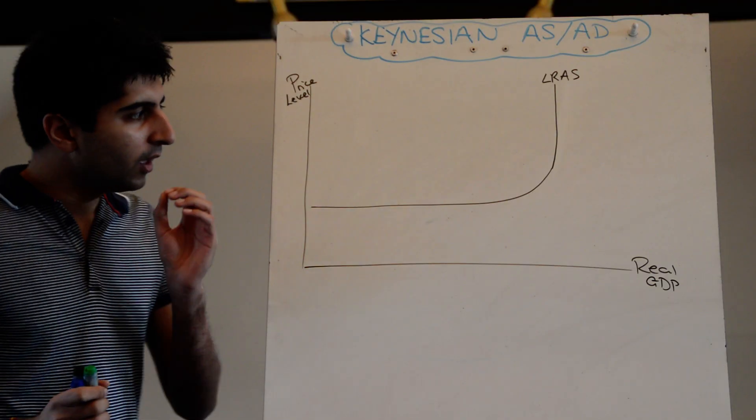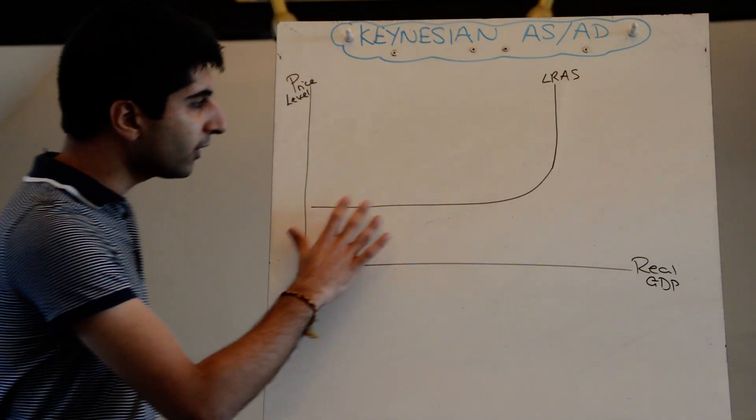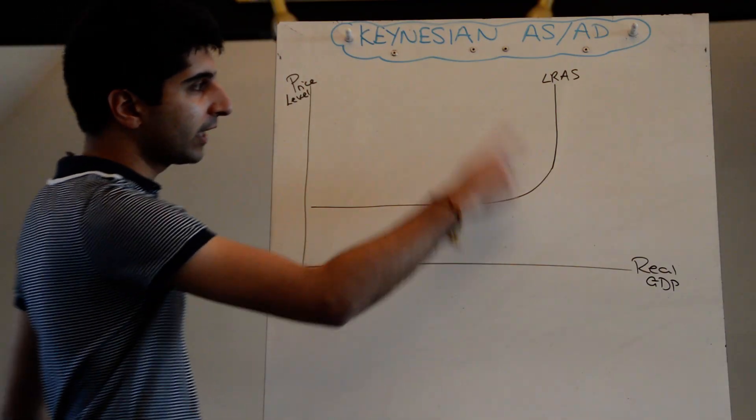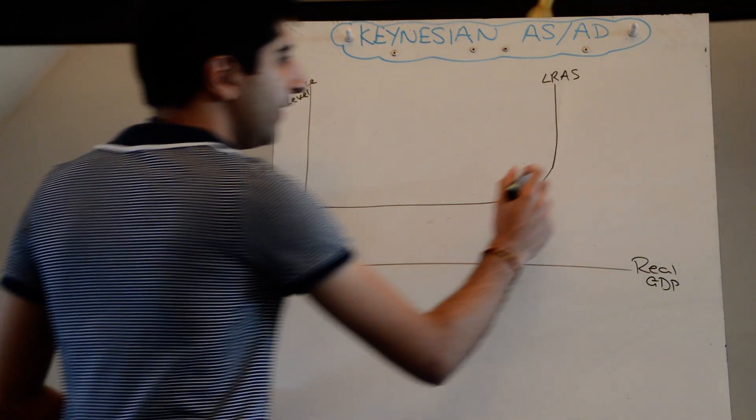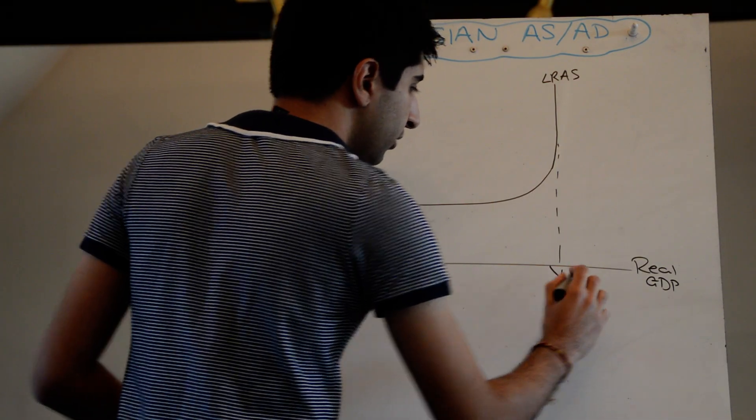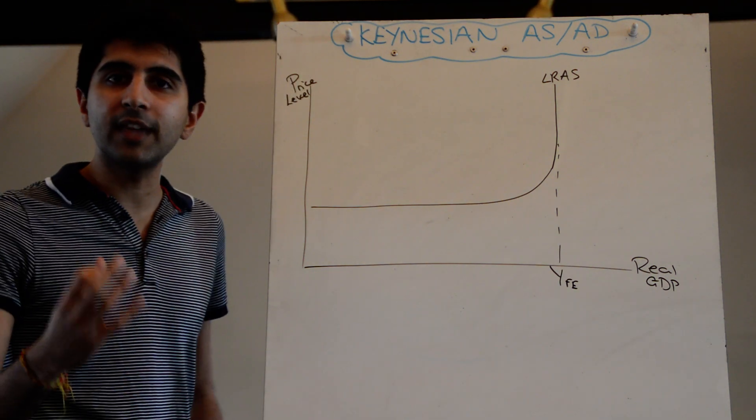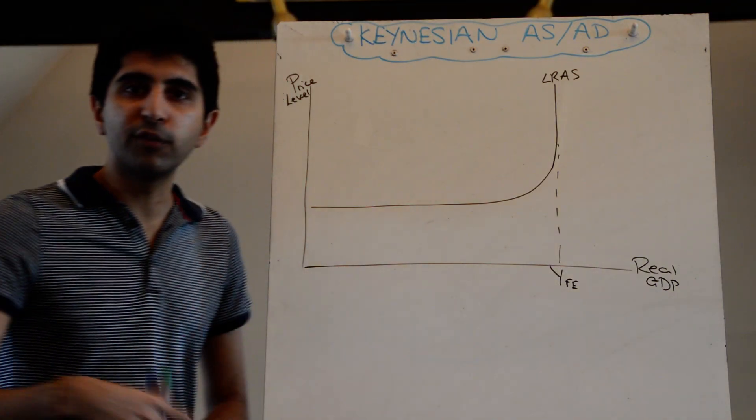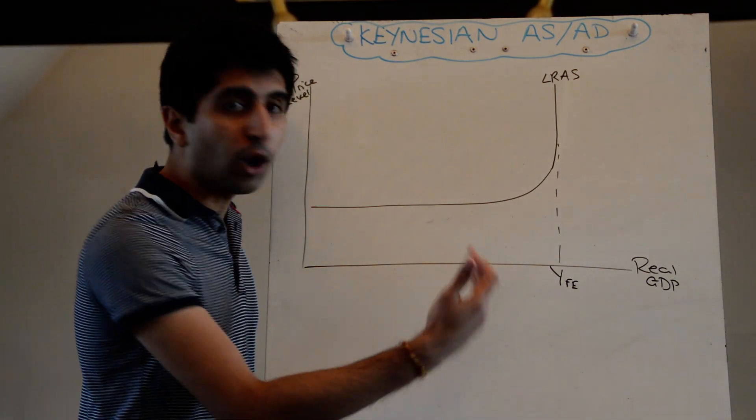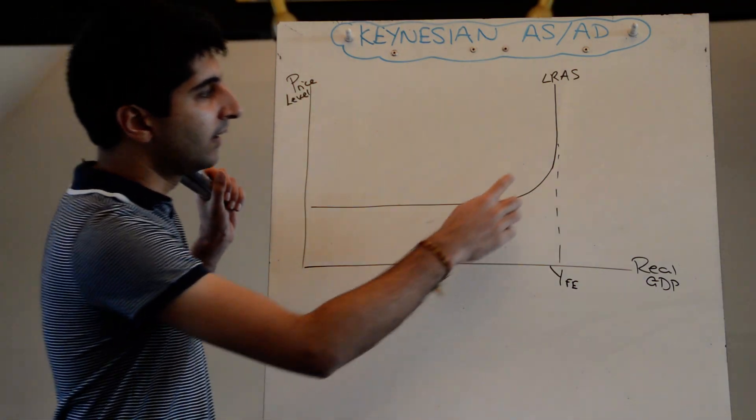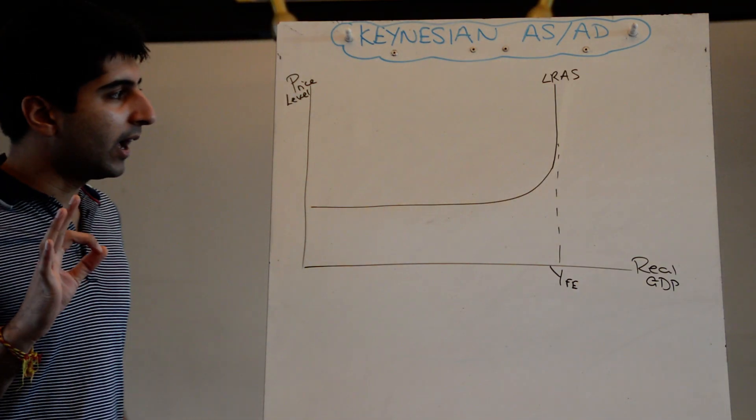He came up with a very different idea of aggregate supply and macroeconomic management. First, he said aggregate supply is not different in the short run and long run—it's just aggregate supply. It's determined by the level of spare capacity in the economy. He agreed there comes a point where production cannot increase sustainably, which is the full employment level of output, representing maximum use of all factors of production. But he argues it's not always vertical.